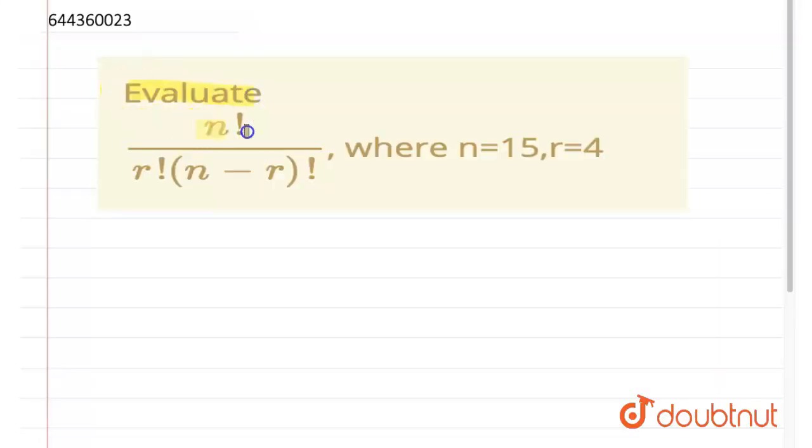Evaluate n factorial upon r factorial into n minus r factorial where n is equal to 15 and r is equal to 4. So we have n factorial upon r factorial into n minus r factorial.